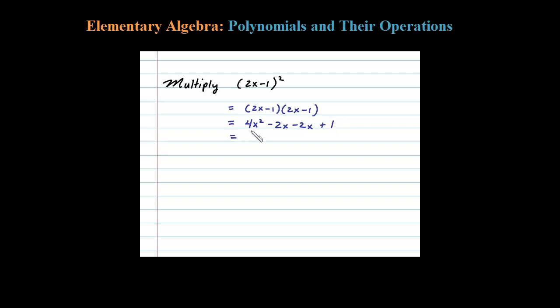And then after that we collect up like terms. So 4x squared, negative 2x plus negative 2x is minus 4x, and then plus 1.